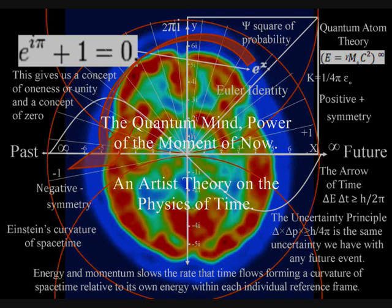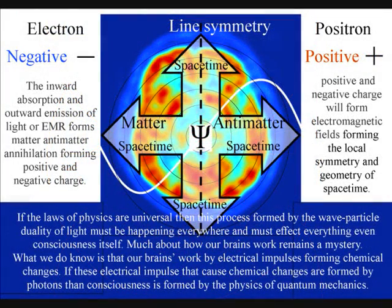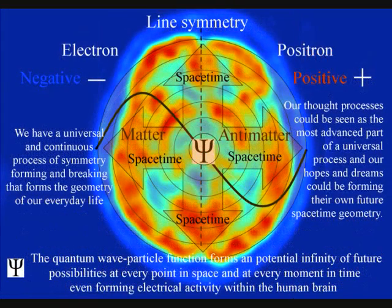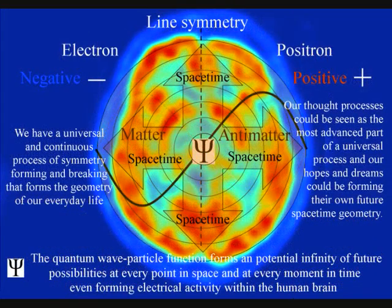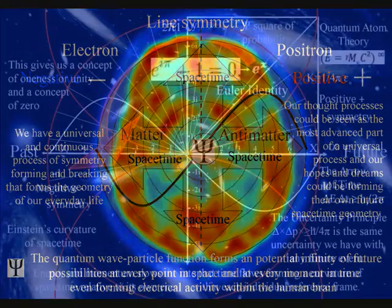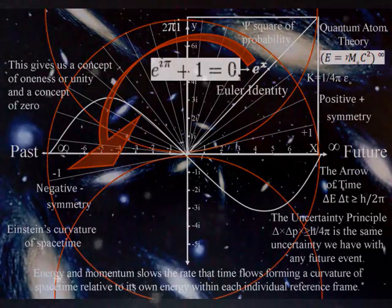Creative thought formed by electromagnetic activity in the brain is the most advanced part of a universal process of continuous energy exchange that can be explained by physics. This might sound odd that physics can explain consciousness, but the potential for creative thought must have existed in the universe from the very beginning of time for consciousness to have been able to evolve within the universe.